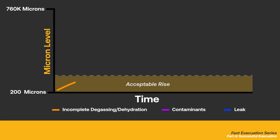If the system maintains a slow rise and eventually levels off at a relatively low micron level, this means that the system was not fully evacuated and is still equalizing. This will require continued evacuation.